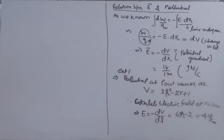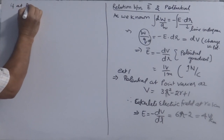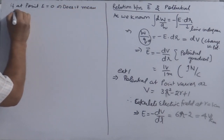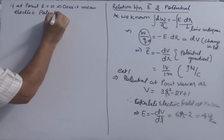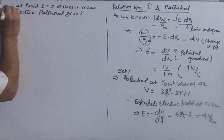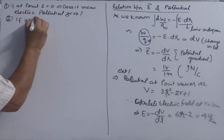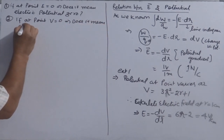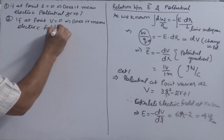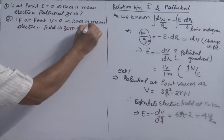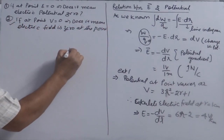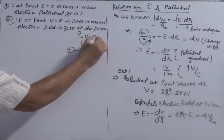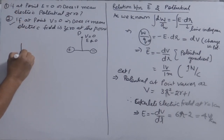Two conceptual questions: First, if electric field is zero at a point, does it mean electric potential is also zero? Second, if potential is zero at a point, does it mean electric field is zero? We already discussed this for the electric dipole — at the equatorial point, potential is zero but the electric field is not zero.